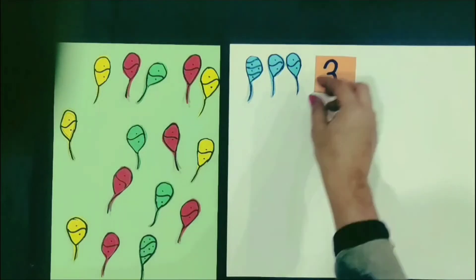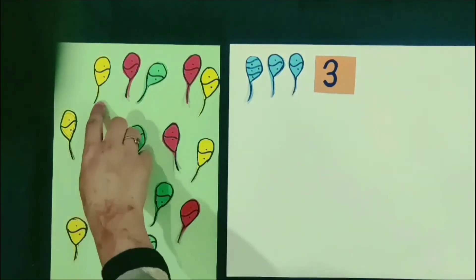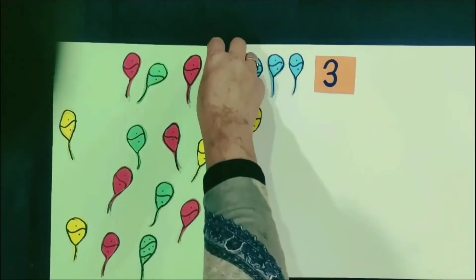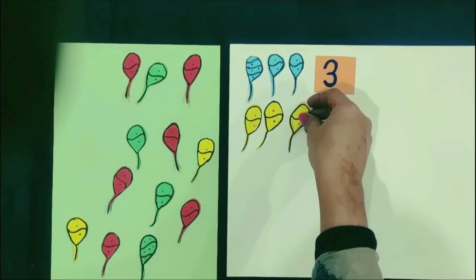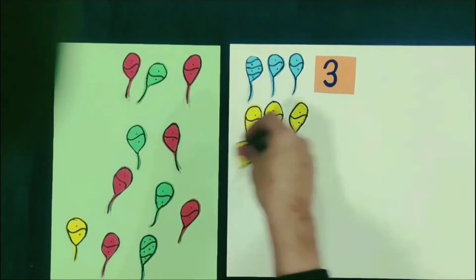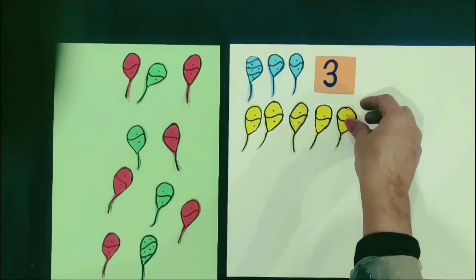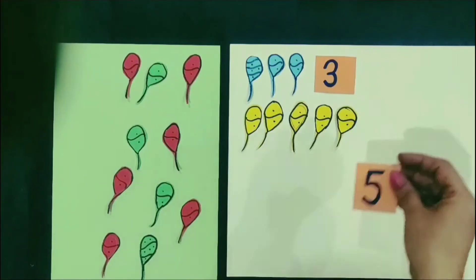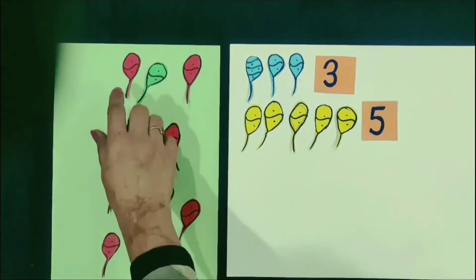Now, we see how many balloons are of yellow color. One, two, three, four, five. Five balloons are of yellow color.